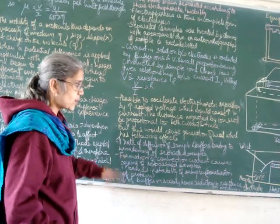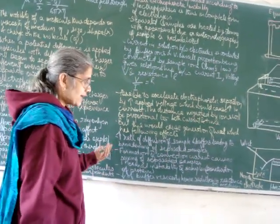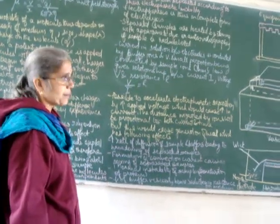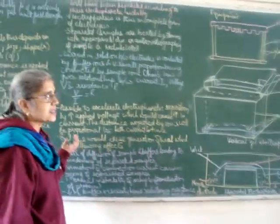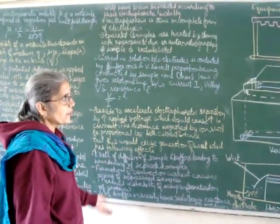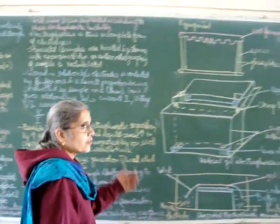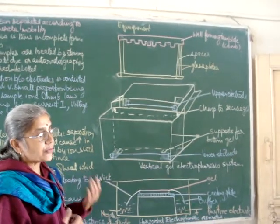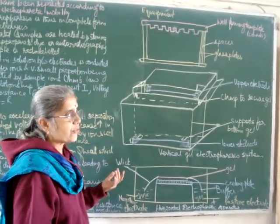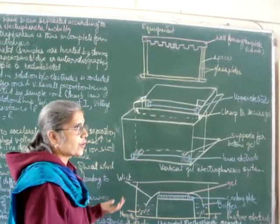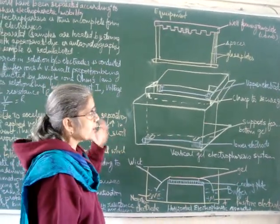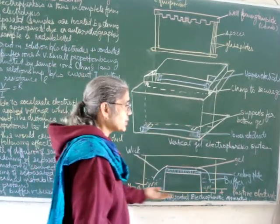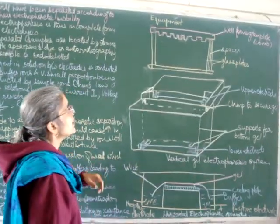Additionally, a decrease in buffer viscosity takes place, causing a reduction in resistance of the medium. These are the main factors that affect electrophoretic separation. Electrophoresis can be performed in two kinds of apparatus: a vertical gel electrophoretic unit or a horizontal gel electrophoretic unit, both requiring a power pack.